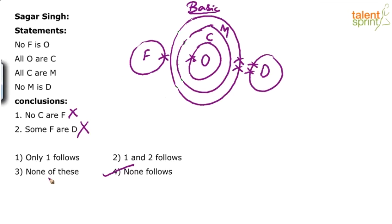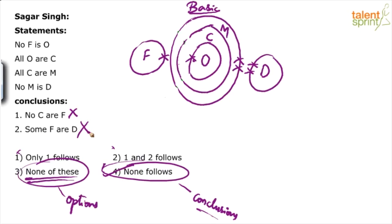Remember, do not consider option three and option four to be the same. Though they look similar, there is a huge difference. Option three says none of these. When will you mark this as the answer? Only when conclusion one, conclusion two, and conclusion four are wrong. But here, conclusion four is correct. None follows is correct. None follows means none of these conclusions follow. None of these means none of these options are correct. None of these always refers to the options. None follows refers to the conclusions. Option four would be the answer.